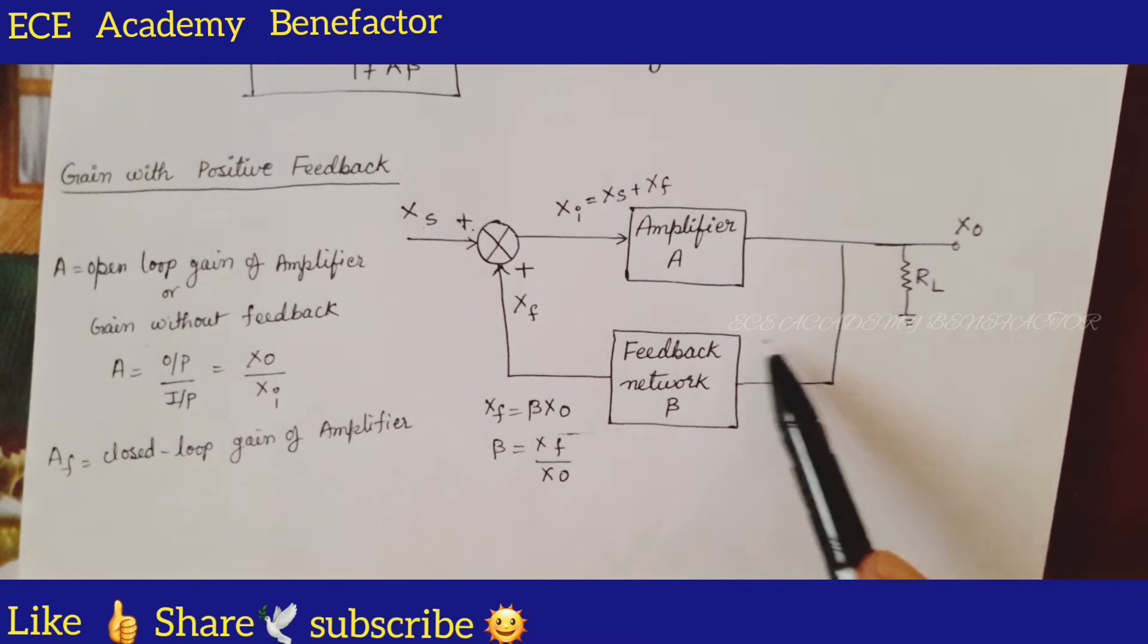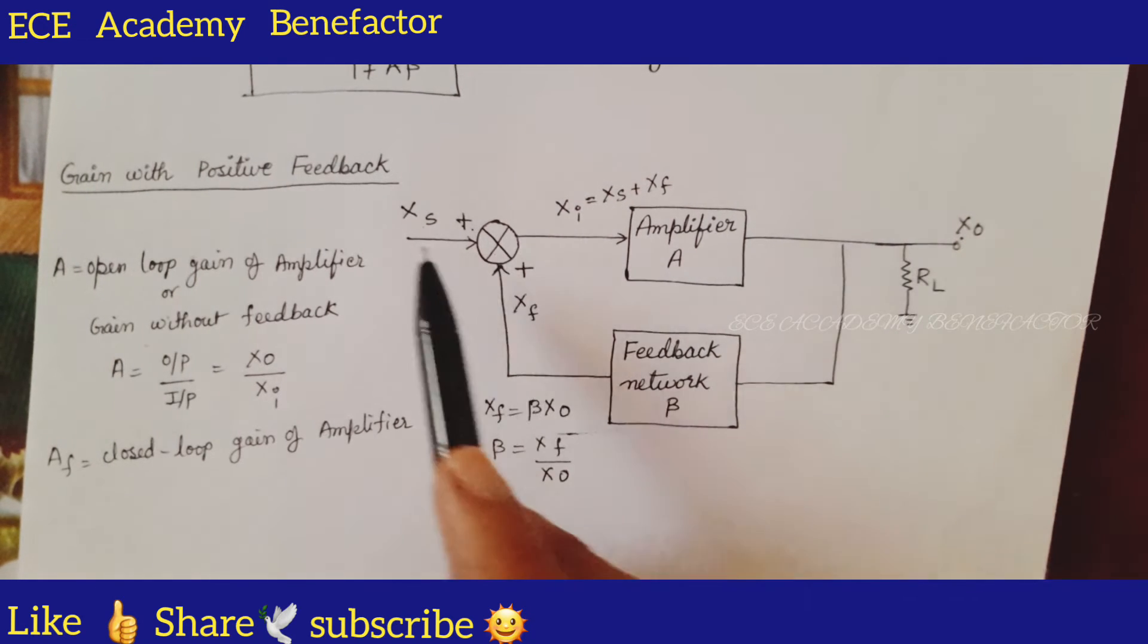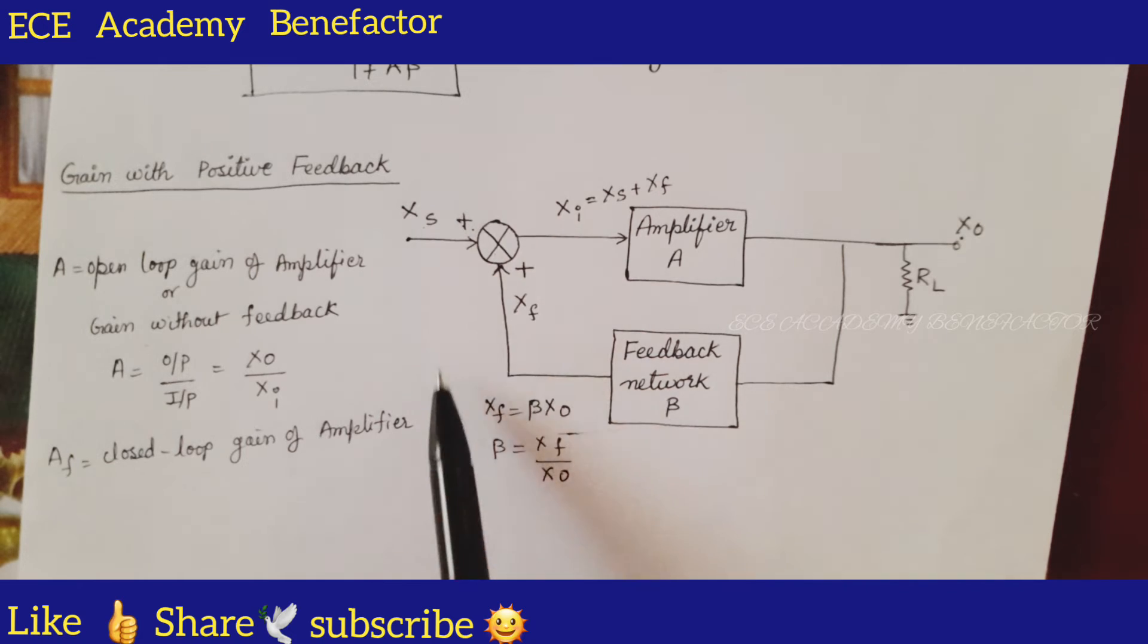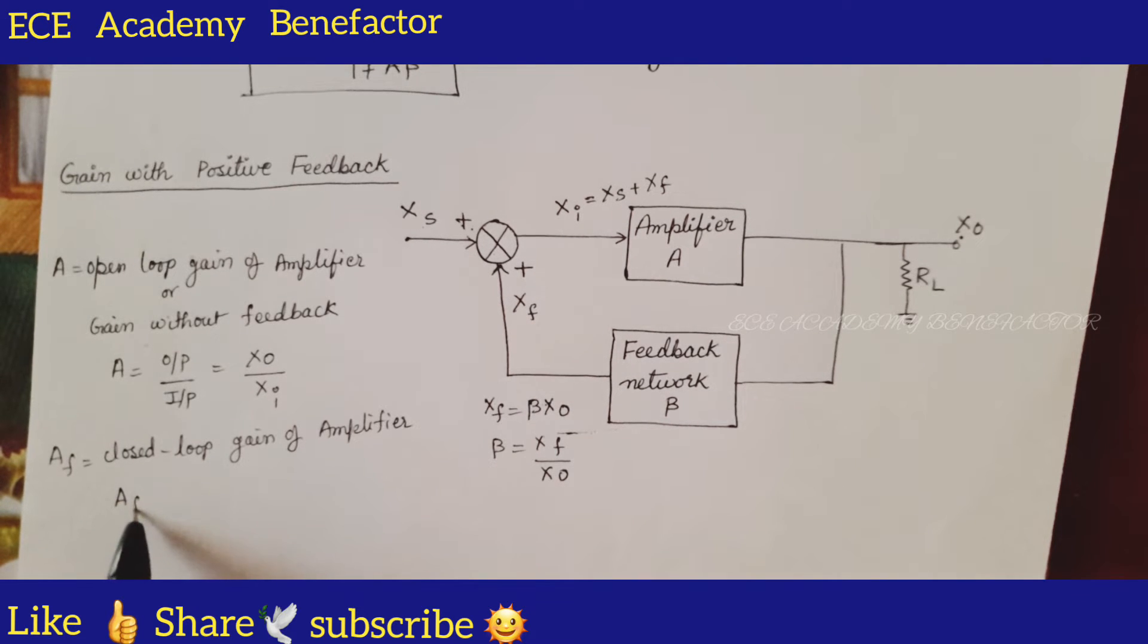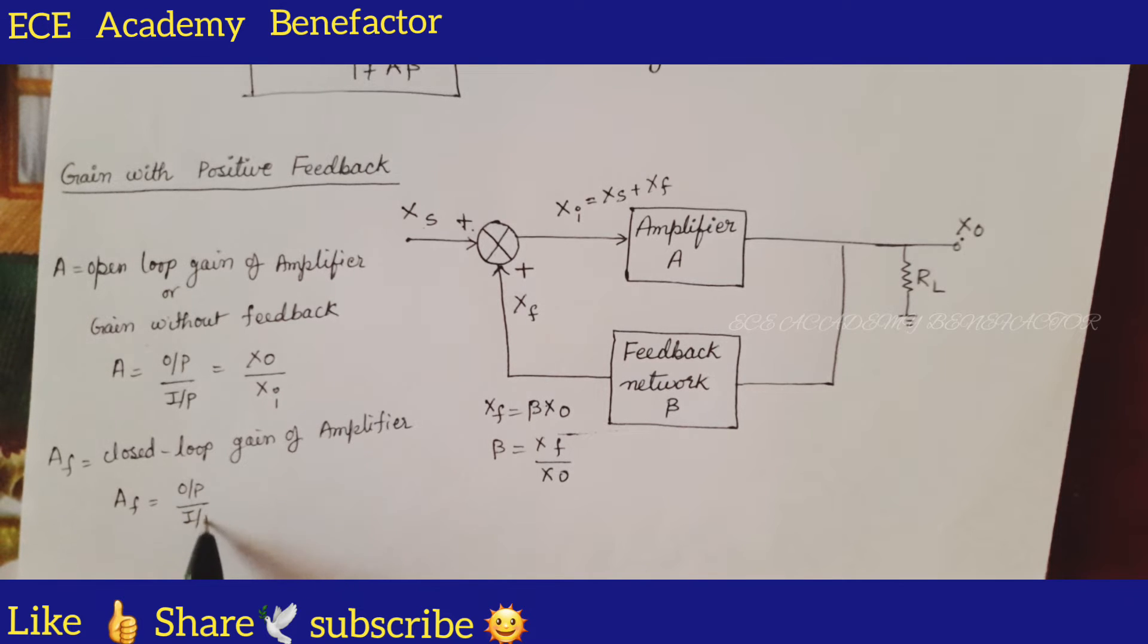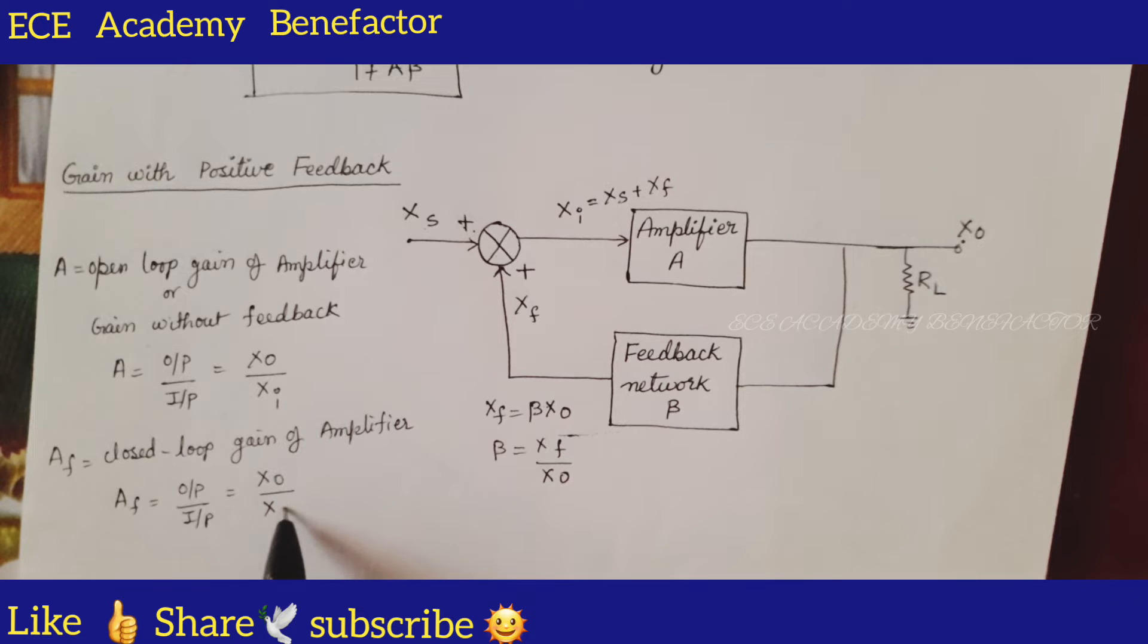This is a closed loop amplifier. The output is Xo. What is the input? Xs. This complete set is closed loop, so output by input. Input here is Xs. Af is equal to output by input. What is output here? Xo, and input is Xs.